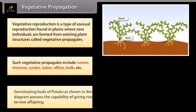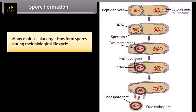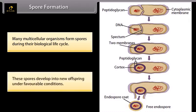Terminating buds of potato, as shown in the diagram, possess the capability of giving rise to new offspring. Many multicellular organisms form spores during their biological life cycle. These spores develop into new offspring under favorable conditions.